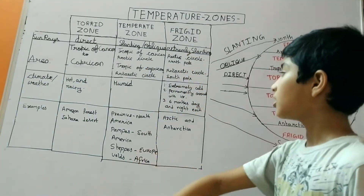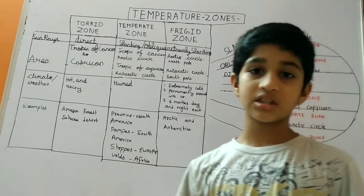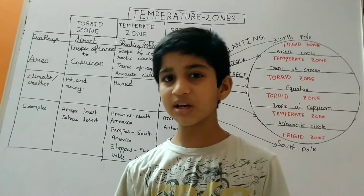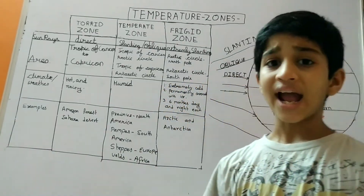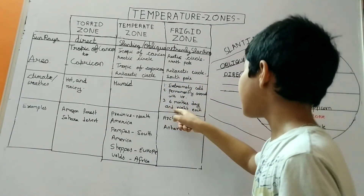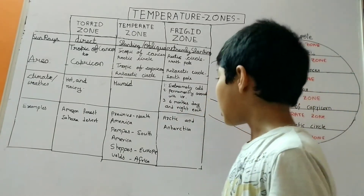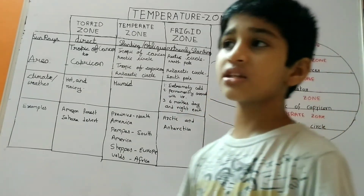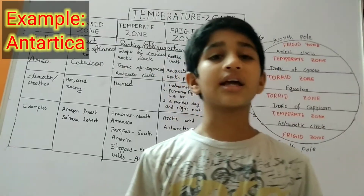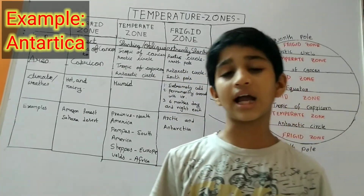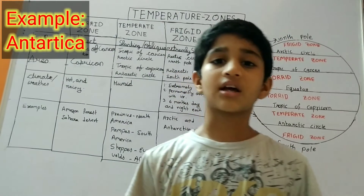Here the climate or weather is extremely cold, and there are six months of day and six months of night each. The examples are the Arctic and Antarctic regions.